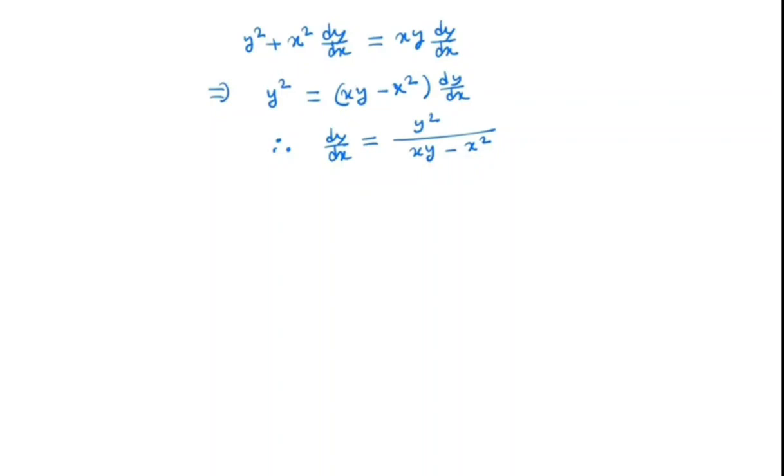So in this case we start by substituting y by x as v. So we will put y is equal to vx. So we have dy dx is equal to v plus x dv dx.